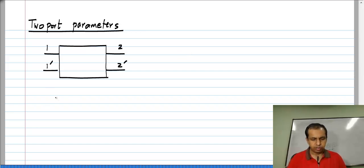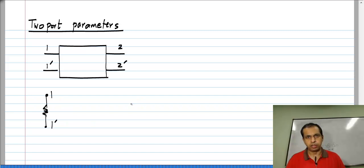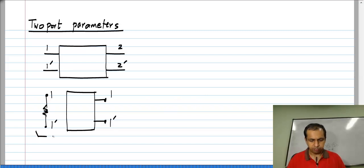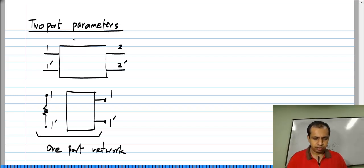I did not define this earlier, but all the two-terminal components — a resistor, for instance — can be considered as a one-port element, because you have a pair of terminals across which you apply a voltage or current. Similarly, a circuit with a single pair of terminals available to apply voltage or current is a one-port. This is a one-port circuit or one-port network, whereas here we have a two-port network.